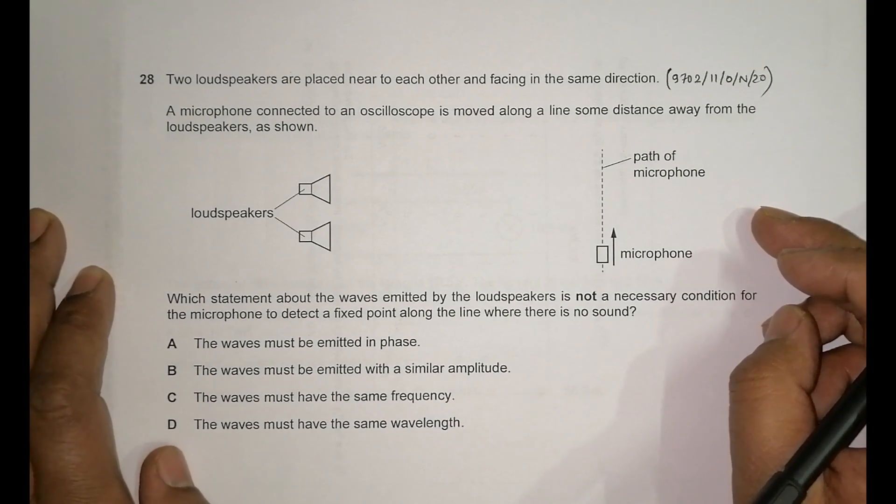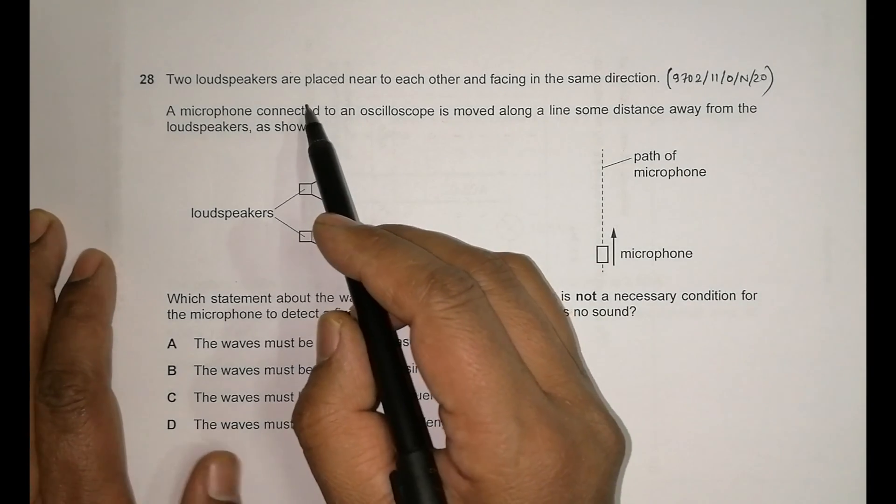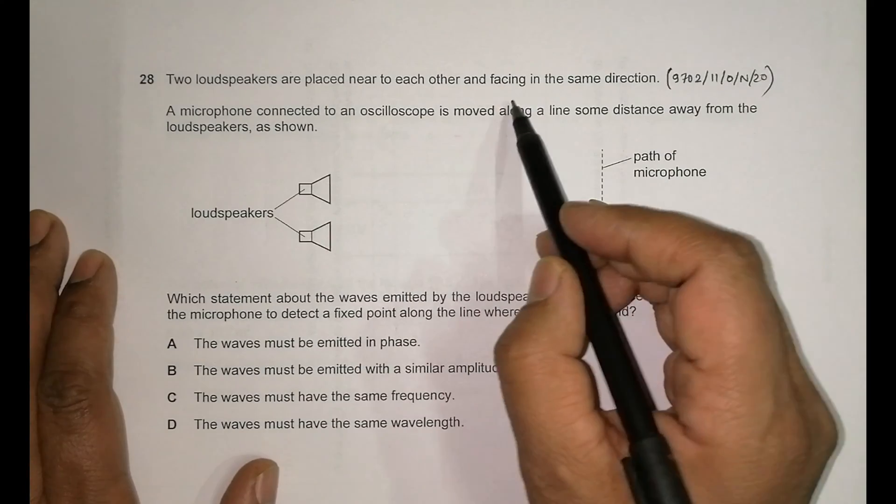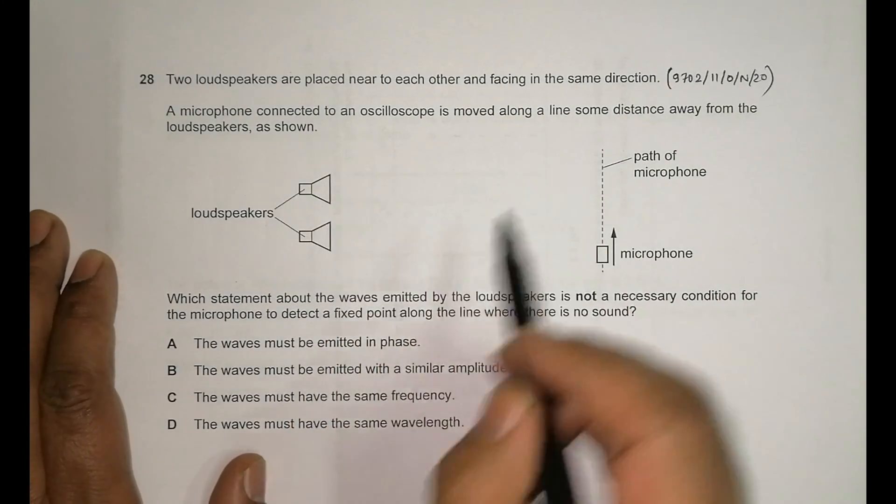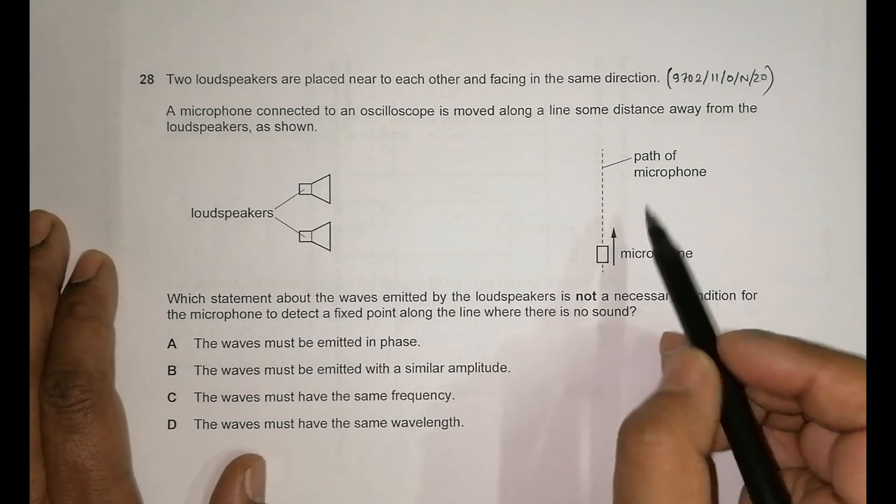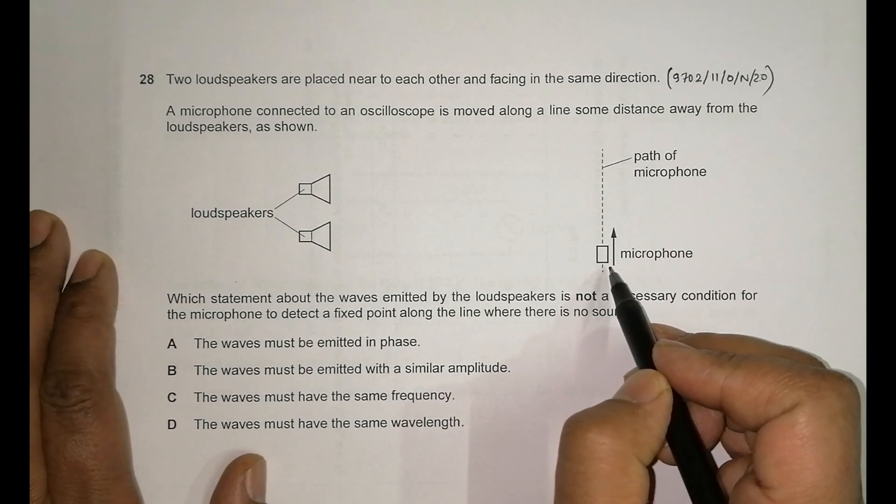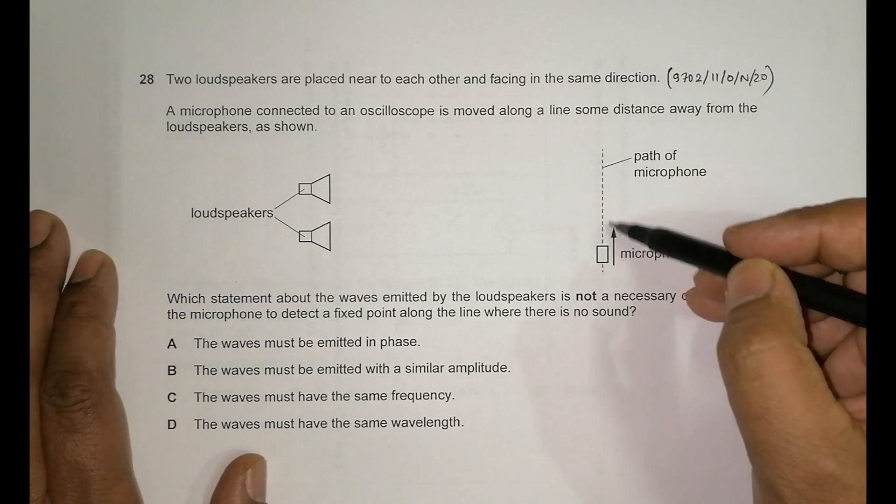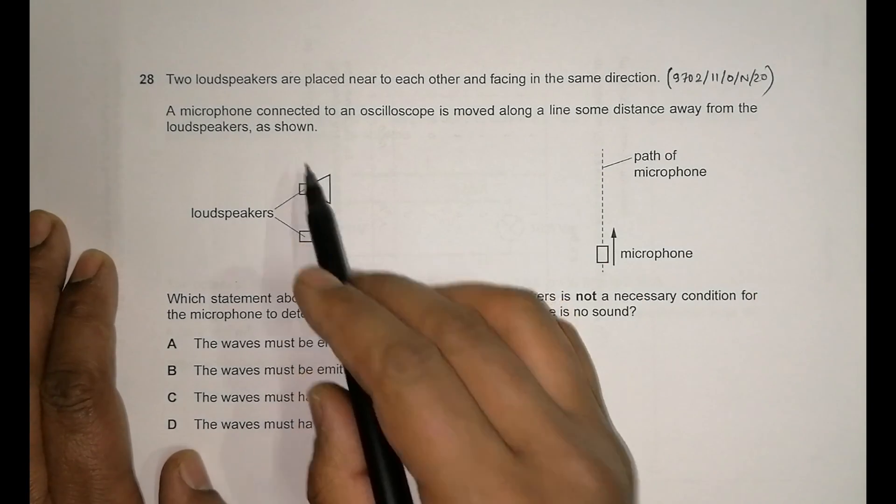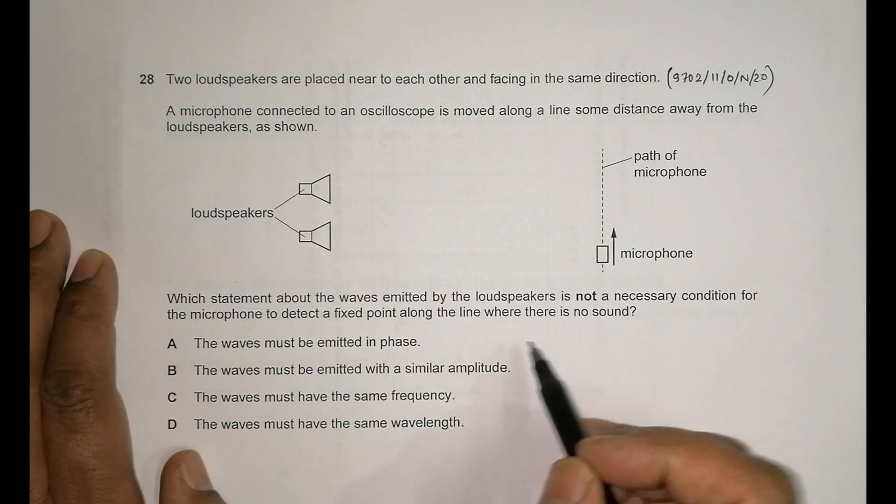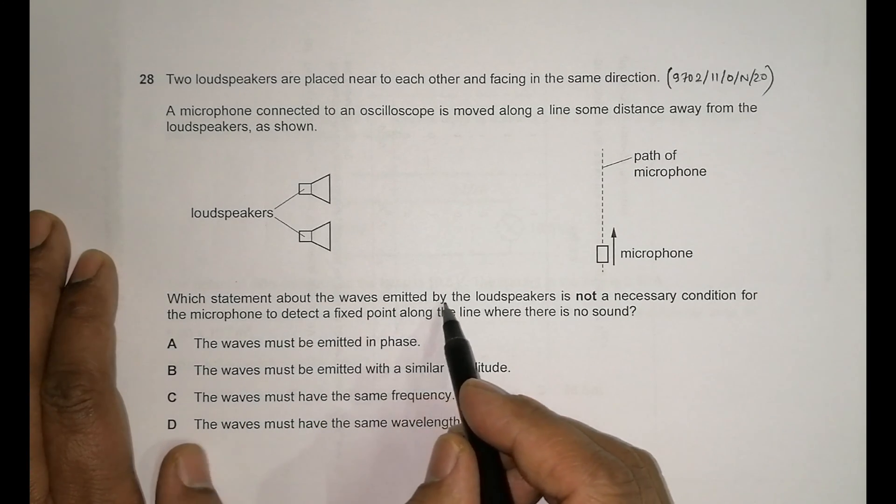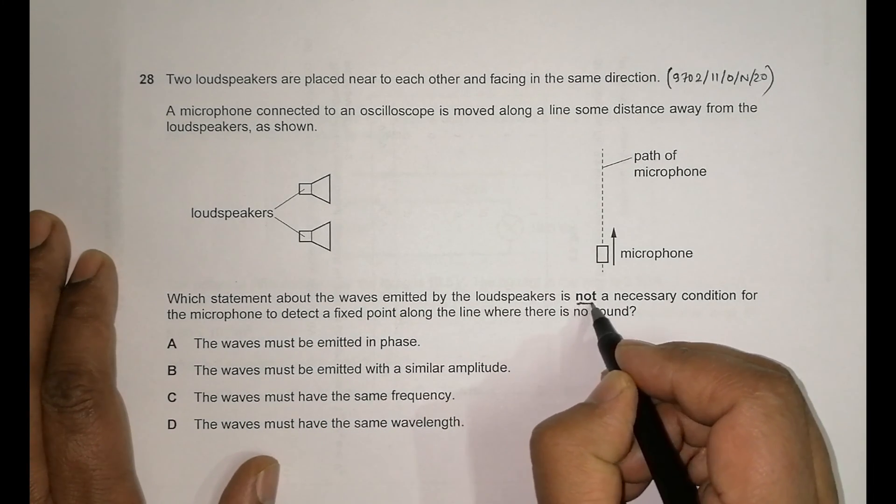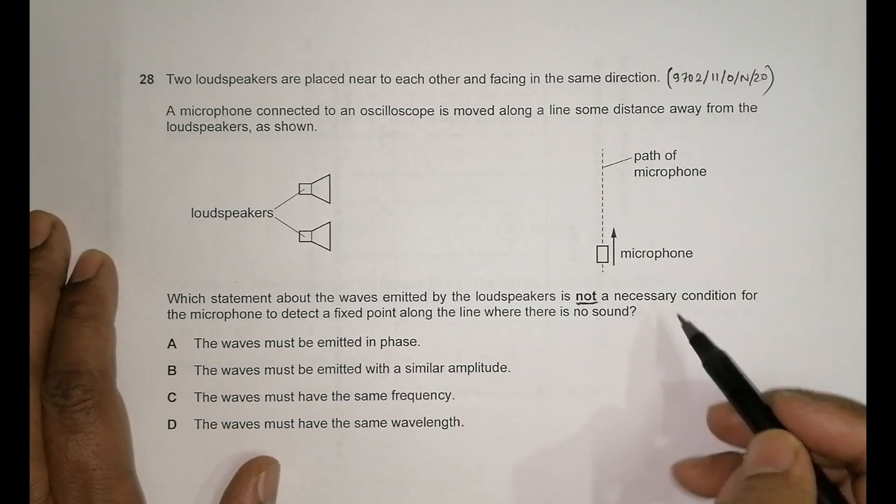It says that two loudspeakers are placed near to each other and facing in the same direction. We have loudspeakers facing to the right, a microphone connected to an oscilloscope is moved along a line some distance away from the loudspeakers as shown. It's the usual procedure to find maxima and minima. The statement about the waves emitted by the loudspeakers is not, so we have to go for some untrue conditions.